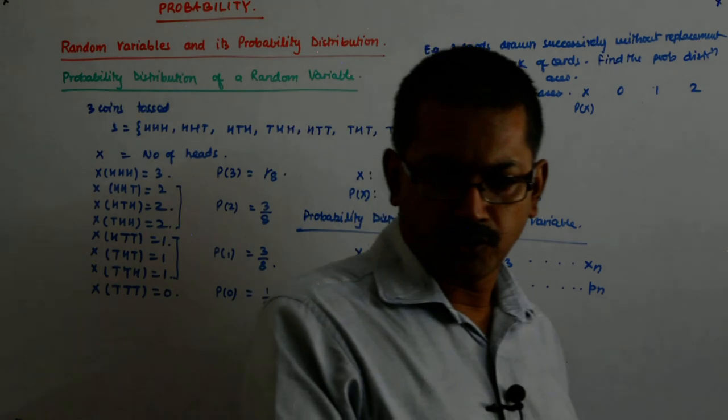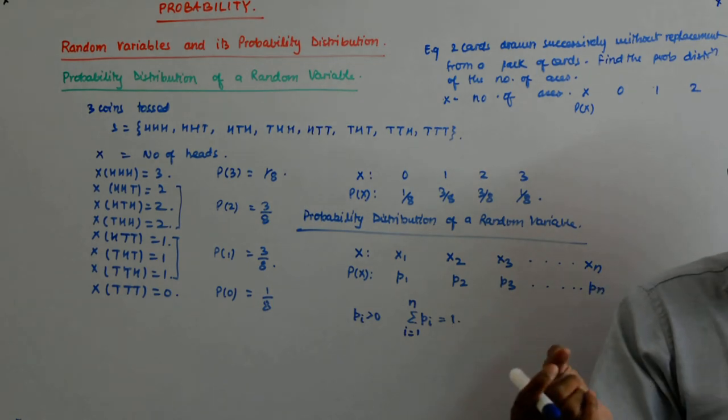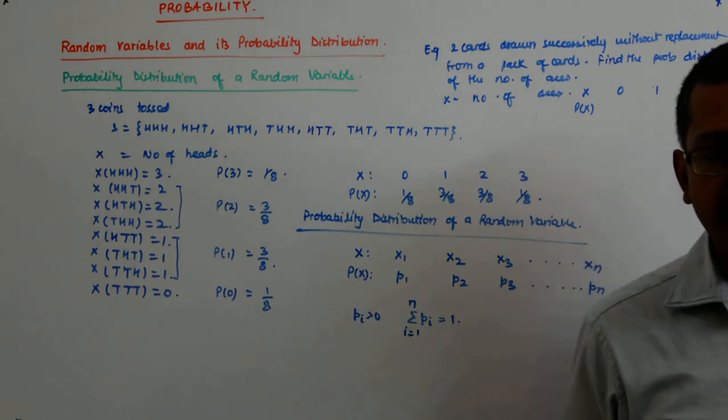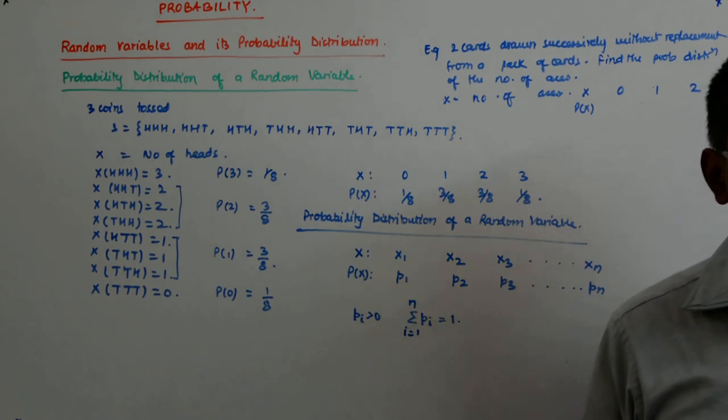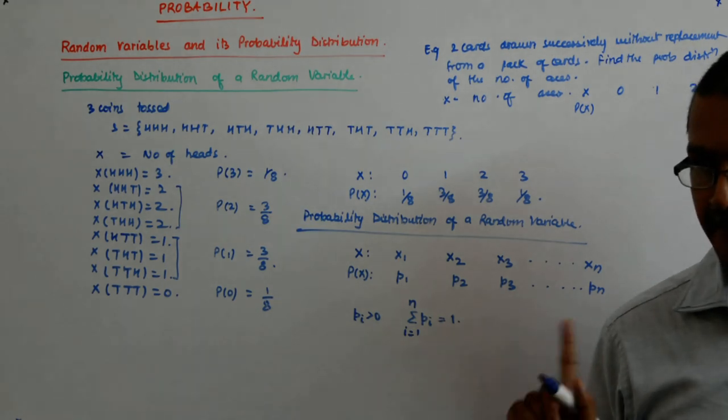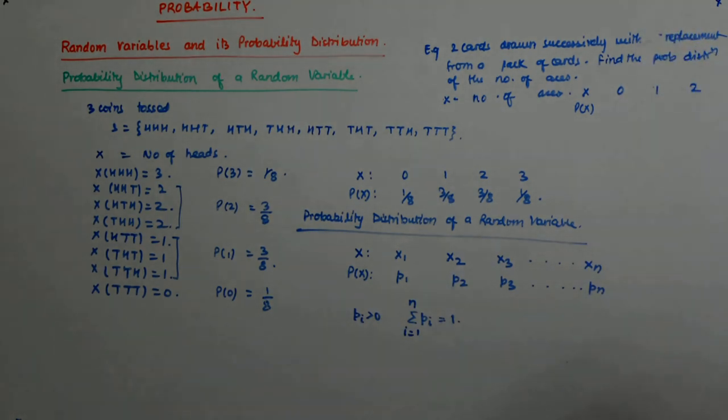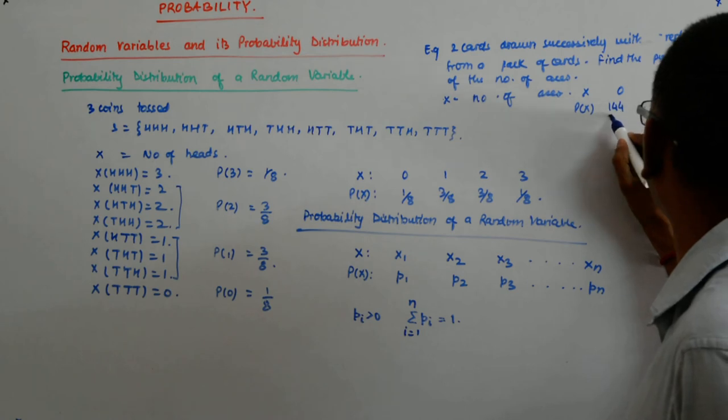No aces. So, there are how many aces in a card? 4. So, there are how many non-aces? 48. So, you first pull a non-ace. That is 48 by 52, that is 12 by 13. Followed by that, you again pull a non-ace. So, 12 by 13 into 12 by 13. With replacement. So, that becomes 144 upon 169.